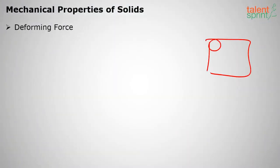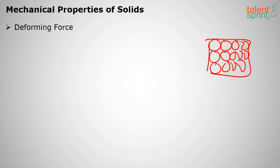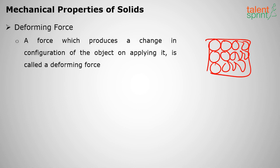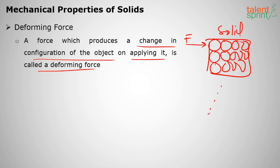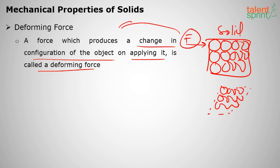A solid is a closely packed body with tightly packed molecules where the mobility of the molecules is very less, and it can be deformed on applying force. A deforming force is one that produces a change in the configuration of the object on applying it. If I apply a force F on a solid, there may be deformation of the object — that force F is called the deforming force.